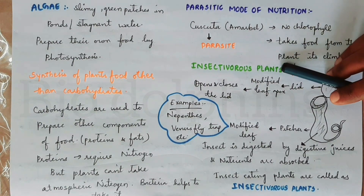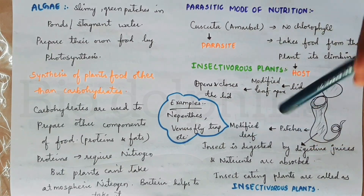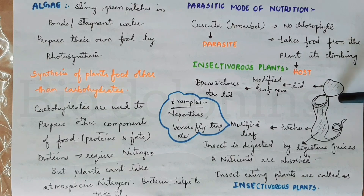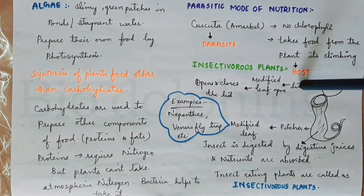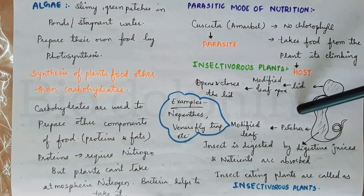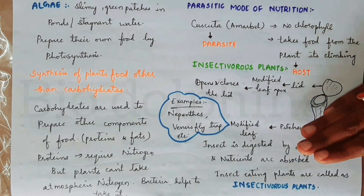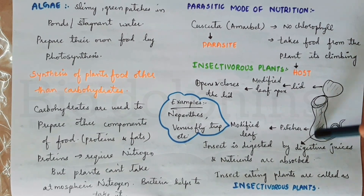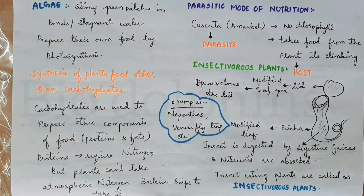Insectivorous plants are insect-eating plants. An example is the Venus fly trap. It has small hair-like structures. When an insect lands on it, the trap closes, keeping the insect inside. Digestive juices are then released to digest the insect, and the plant absorbs the nutrients.